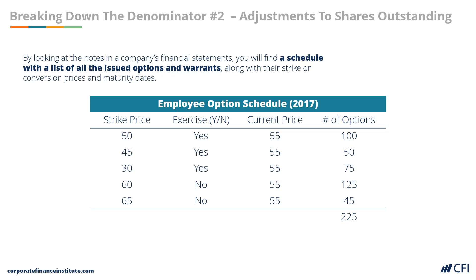In the money refers to an option contract that, if exercised, would be worth some amount of money. Another way to look at this is to compare the option strike price to the current price of the underlying asset. If the strike price is lower than the underlying asset's price, the option is in the money. The next step is to assume those securities are converted, the company receives the cash, and the number of shares outstanding goes up.